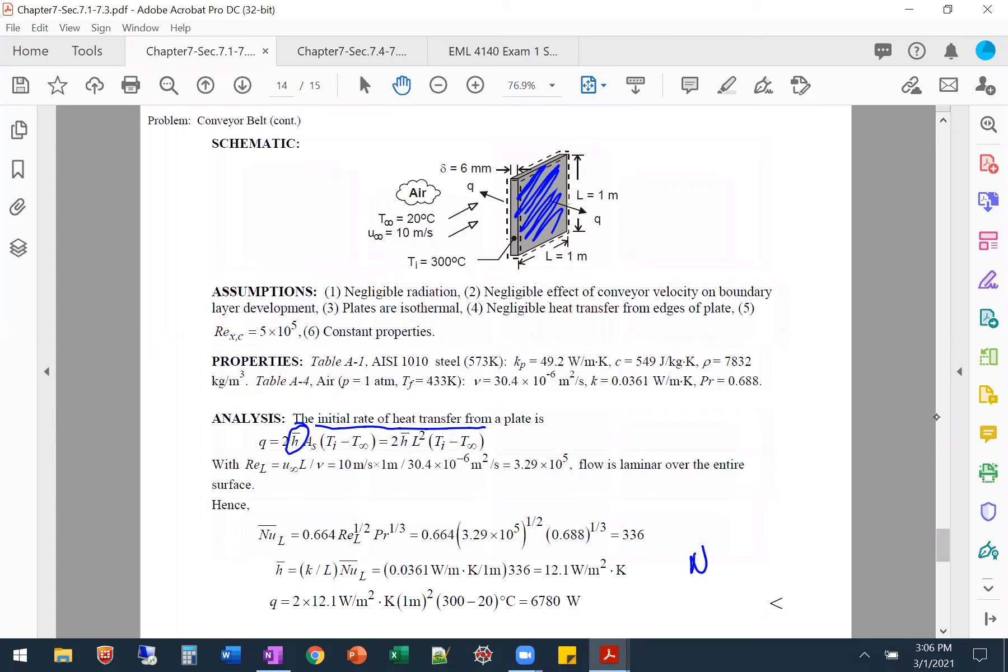Our equation for the convection coefficient, the average one, is this. So that means we have the length. We can get the properties. We need Nusselt number, and that's what you see right here is the Nusselt number. That requires the Reynolds number. So we get the Reynolds number, which also tells us the flow is laminar. So that means we can use the equation that's for laminar, and we get the Nusselt number.